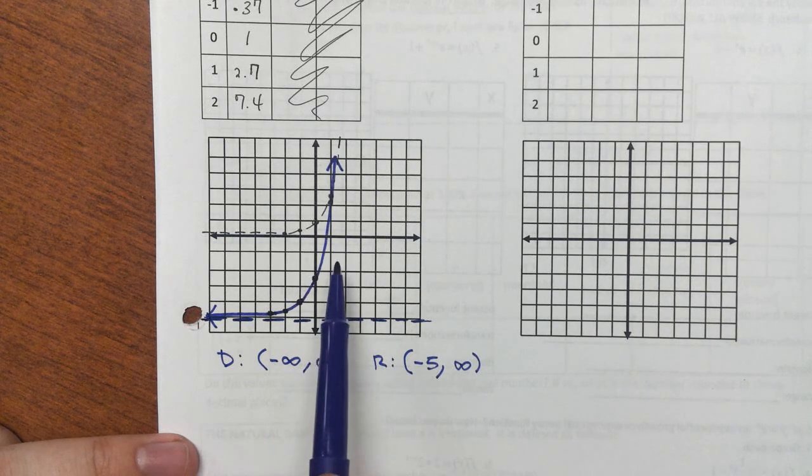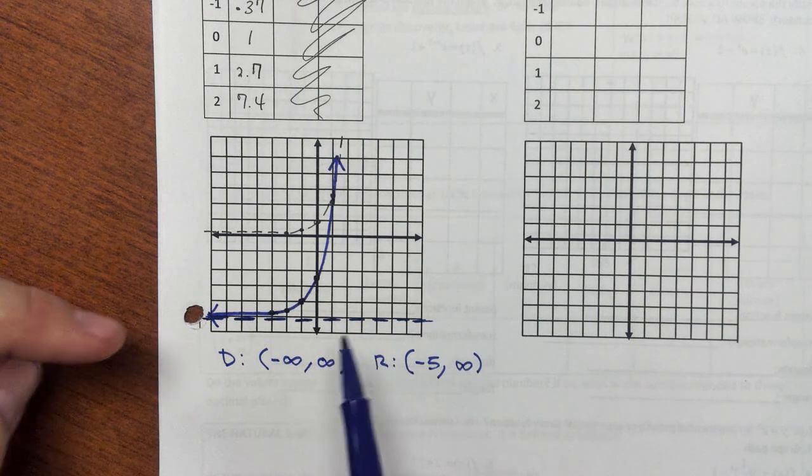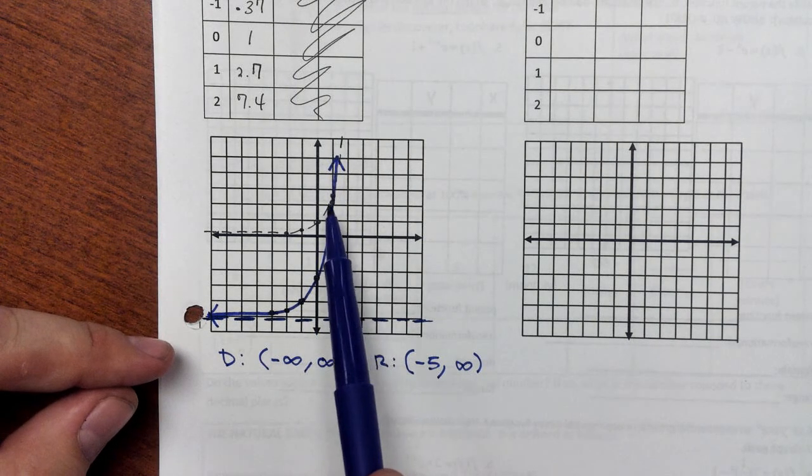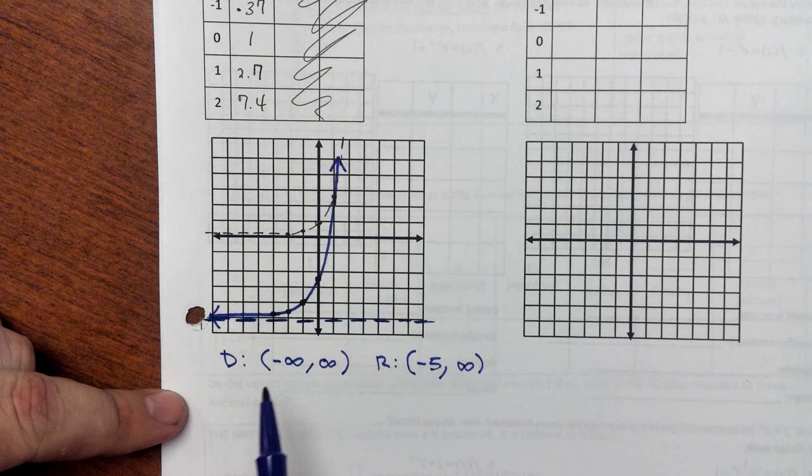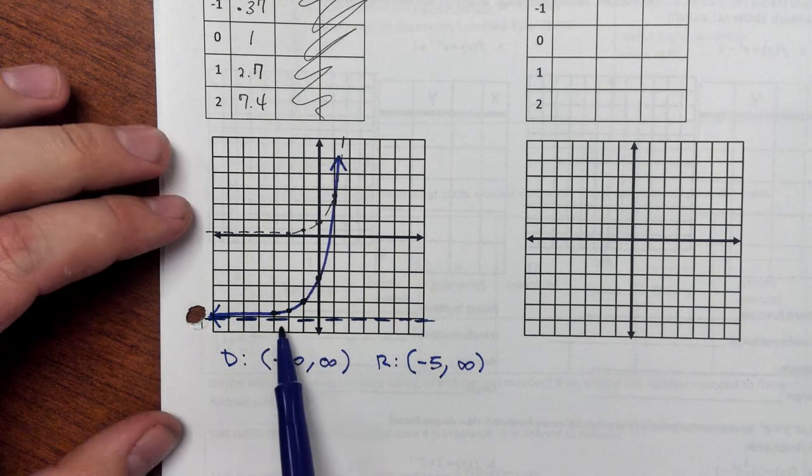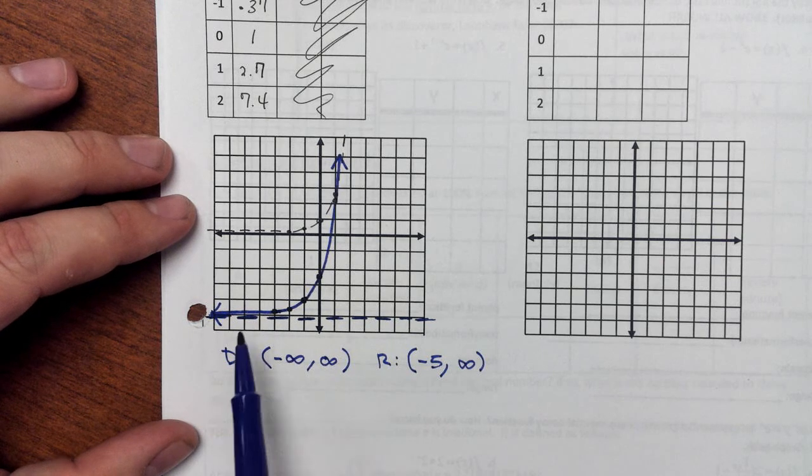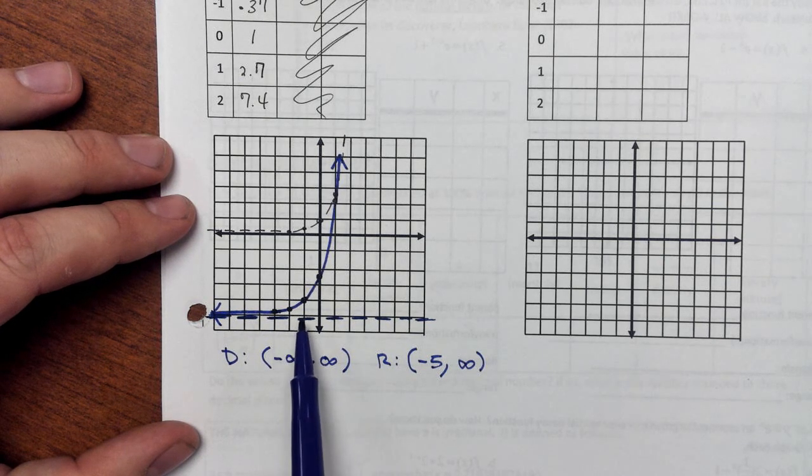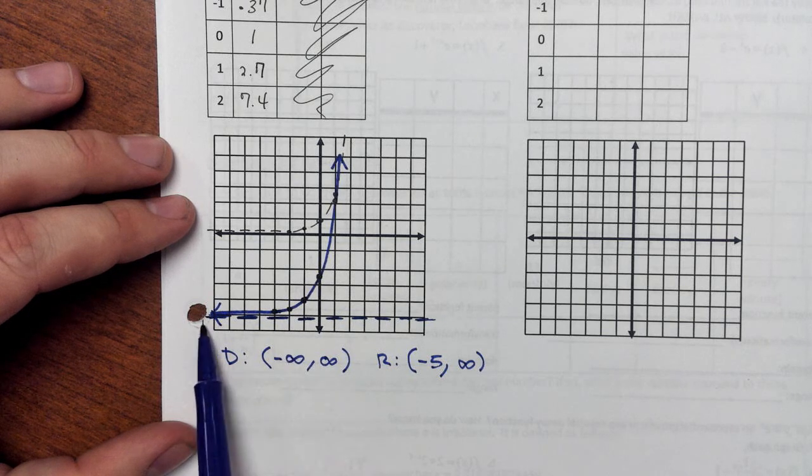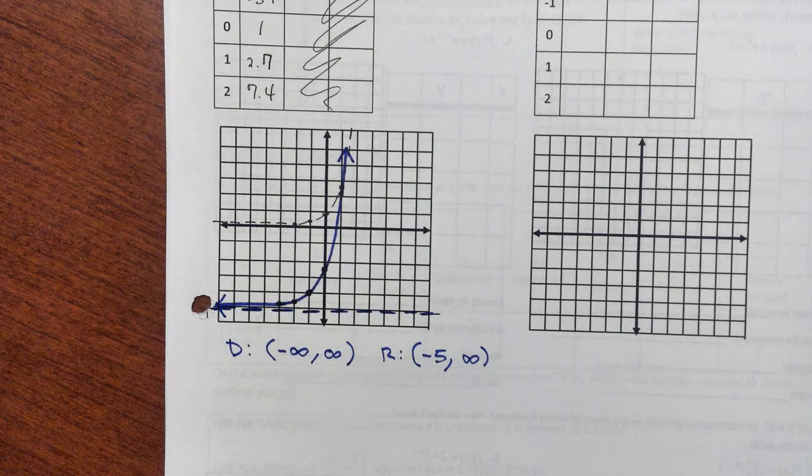End behavior is another important thing here. Remember, the end behavior. What we see here is as x approaches positive infinity, the right side of this graph is shooting up towards positive infinity. As x approaches negative infinity, the left side of the graph is going down, getting flat against the asymptote. So as x approaches negative infinity, y is approaching negative 5.